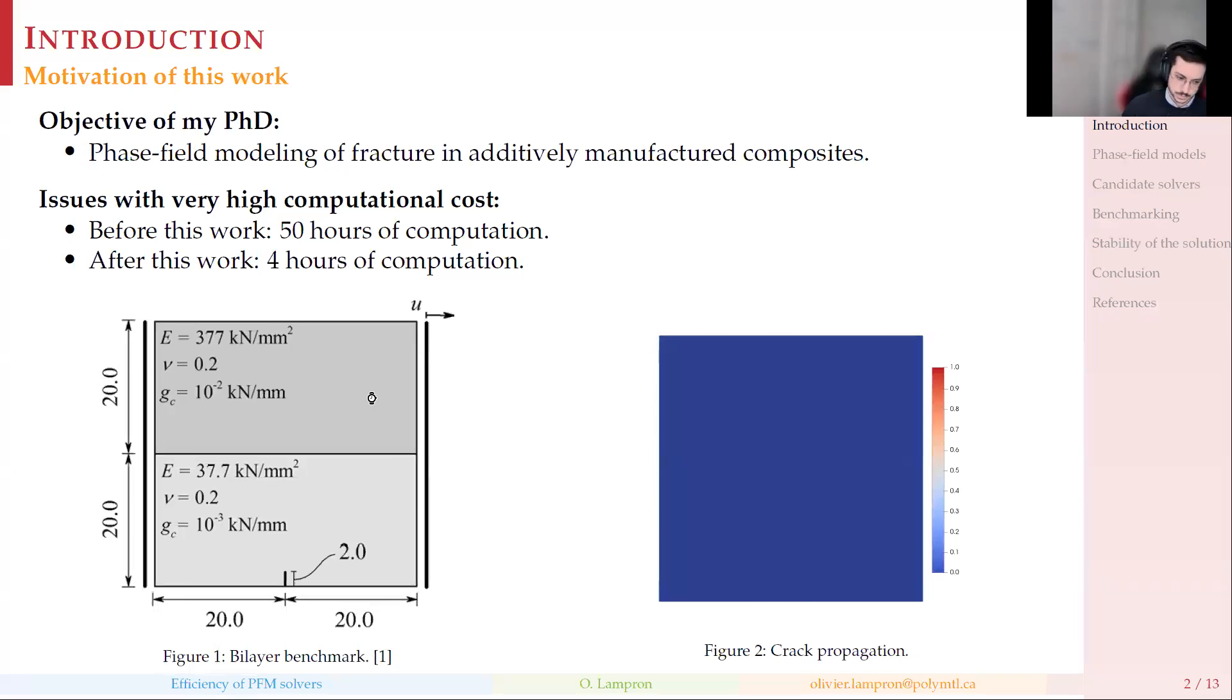The bottom one is made of a soft material, and the top one is 10 times stiffer. We're going to fix the left part and pull on the right-hand side. This is the crack propagation that we get, and it's the expected solution. But the issue is to get this computation with our original solver, it takes us 50 hours. What I'm going to show today is by simply using a better solver, we brought this down to four hours of computation.